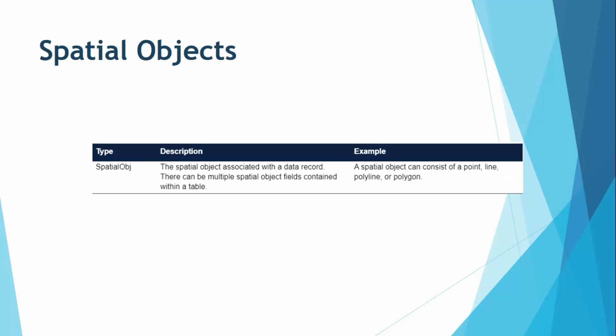Next are spatial objects, which are used for mapping and maintaining data records. A point, line, polyline, or polygon all fall under spatial objects. There can be multiple spatial object fields in a table. Additionally, if you have data that cannot be represented as text — such as an image, video, or audio file — spatial objects are used for those as well. When you import a table or Excel file, spatial objects are automatically invoked.